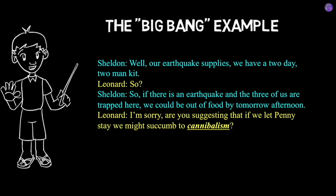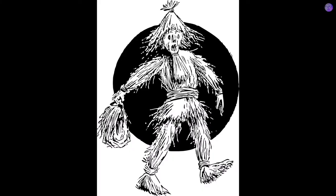But then Leonard says: 'I'm sorry, are you suggesting that if we let Penny stay, we might succumb to cannibalism?' So here, Leonard is distorting Sheldon's argument, because at this point Sheldon didn't actually say anything about cannibalism. Leonard is exaggerating and stretching Sheldon's point of running out of food into cannibalism. So this is clearly a strawman argument — Leonard has created a strawman, a caricature argument, on the basis of Sheldon's original point.